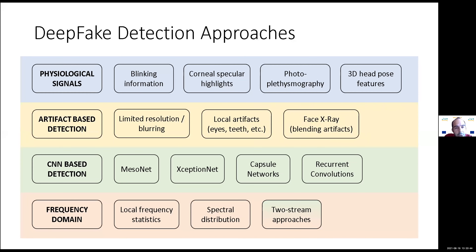Here I try to summarize the main categories of deepfake detection methods. The literature is vast — a recent survey listed more than 100 detection methods. We can broadly classify them into four main classes. One is based on physiological signals: trying to see issues with blinking in the eyes, inconsistencies in corneal specular highlights, or applying photoplethysmography to estimate the pulse rate on a human subject.